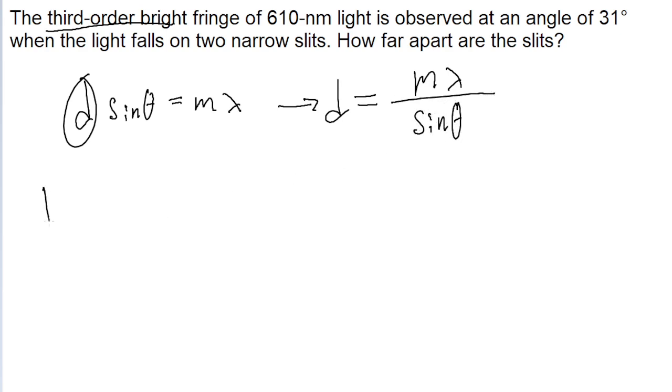So all we have to do is plug in the values that were given to us in the problem. M is 3, because we're told that this is a third-order bright fringe, times lambda, which is the wavelength, so that's 610 nanometers, or 610 times 10 to the power of negative 9 meters, all divided by the sine of the angle, which is 31 degrees.